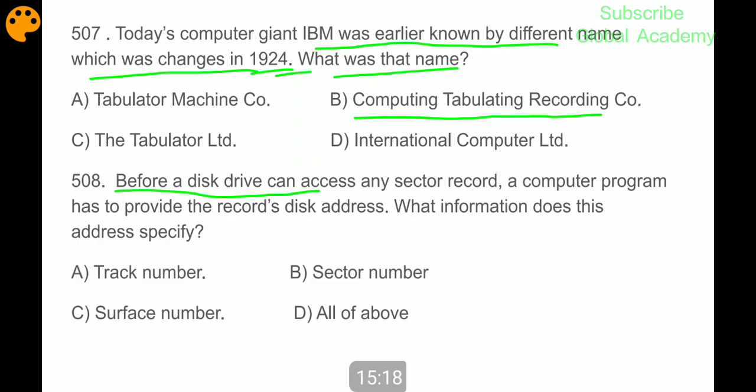Before a disk drive can access any sector record, a computer program has to provide the record's disk address. What information does this address specify? Track number, sector number and surface number - all of the above.